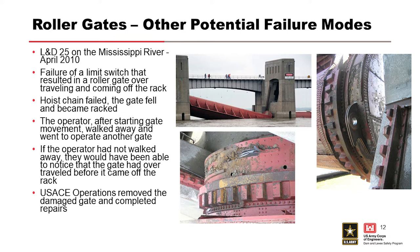Quick case history: at Lock and Dam 25 in April 2010, the limit switch failed, and the gate actually came off the rack. Whenever it comes off the rack, it's no longer supported on one end and can suddenly drop. Although the limit switch failure wasn't caused by operator error, the root cause was that the operator was operating the gate and walked away without watching the gate travel the whole way. When you're operating a million-dollar piece of equipment, you need to keep an eye on it. But this is really also an electrical failure mode.